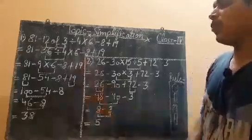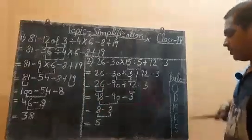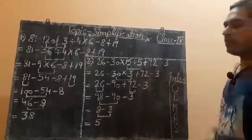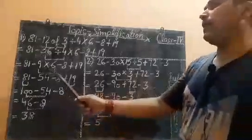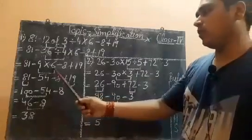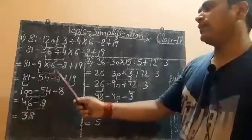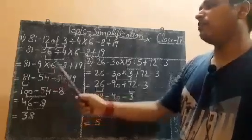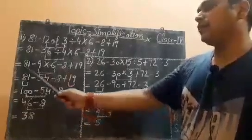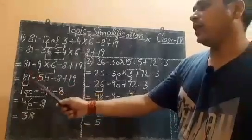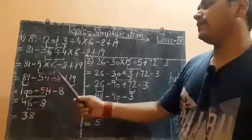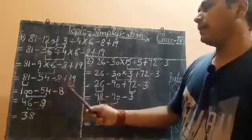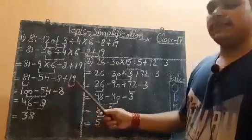Now after division, what you have to solve is multiplication. Now 9 multiply by 6 — this you have to solve. So 9 times 6 will be 54, and the rest of the numbers you will copy down as they are. So it becomes: 81 minus 54 minus 8 plus 19.